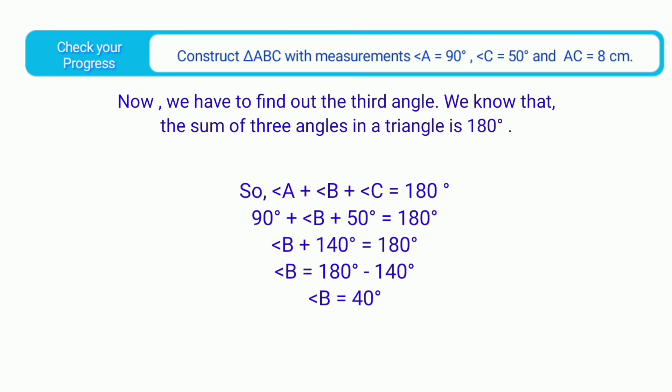So angle A plus angle B plus angle C equals 180 degrees. Angle A is 90 degrees and angle C is 50 degrees, so 90 plus 50 equals 140 degrees. That implies angle B equals 180 minus 140, which is 40 degrees. Therefore angle B equals 40 degrees.